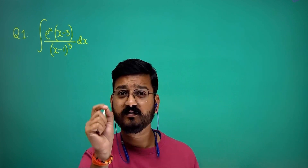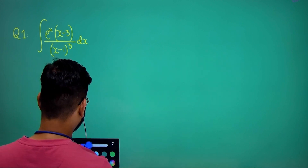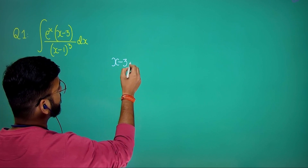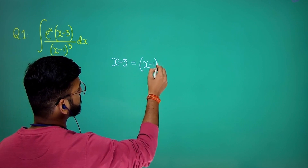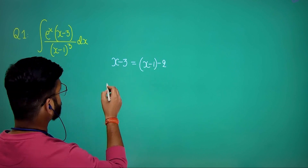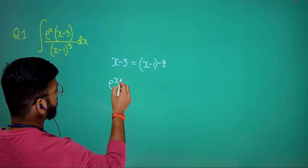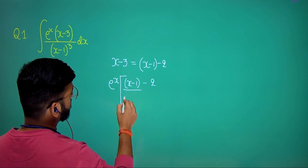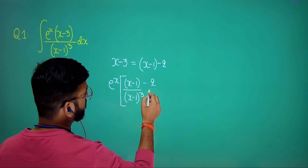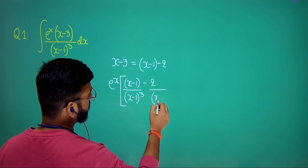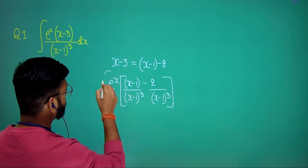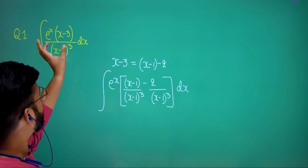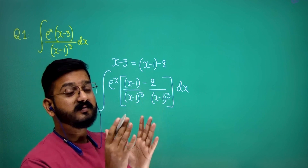We will write the numerator in terms of the denominator. We can write x minus 3 as (x minus 1) minus 2. So we can express this integral as (x minus 1) minus 2, all divided by (x minus 1) cubed. Originally the expression didn't look like it had two separate functions, but now that we've written x minus 3 as (x minus 1) minus 2, we can see two functions.